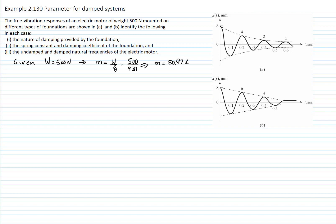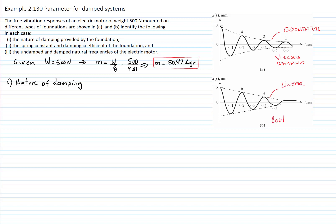Let's look at the curves and try to find out the nature of the damping. In the first curve, the amplitude decreases in an exponential form, which means the damping is viscous damping — the amplitude is multiplied by an exponential to the negative zeta·ωn·t. In the second case, we have a linearly decreasing amplitude, which means the damping is Coulomb or dry friction damping.